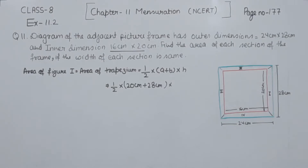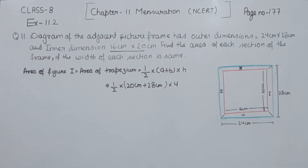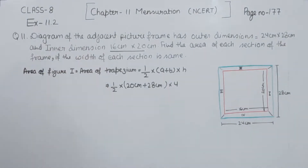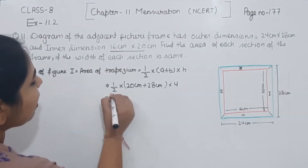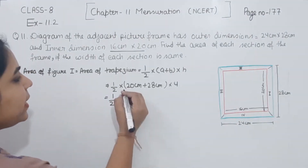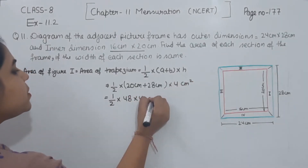The height we are having as 4, since the difference between 20 and 28 gives us a height of 4. So we are going to solve this: half multiplied by 20 cm plus 28, which gives 48, multiplied by 4 cm.